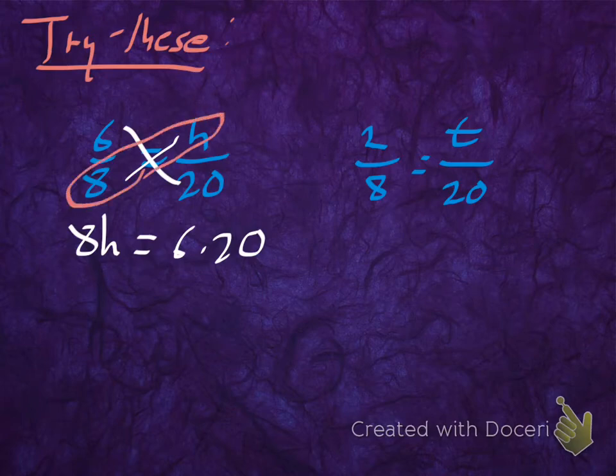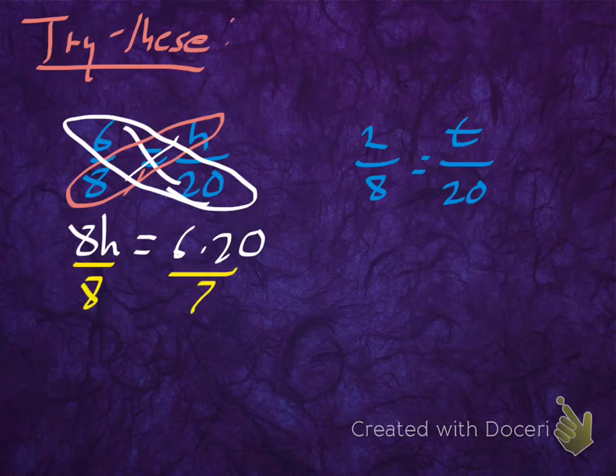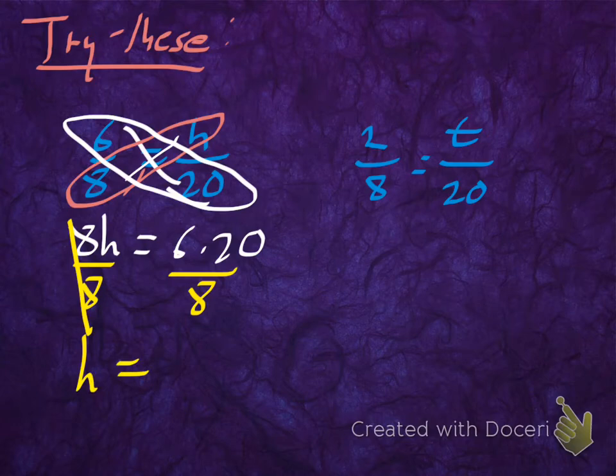So the cross-multiply step is 8 times h. That would be this diagonal, those cross-products, and that's going to equal these guys here, which is 6 times 20. So now let's do the next step, which is divide both sides by 8 to get h by itself. And once again, remember I said we'll get to that simplification.